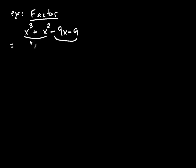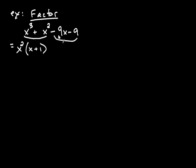What do the first two terms have in common? They've got an x squared. So I'm going to factor that out of both of them. x squared times x gives x cubed, and x squared times positive one gives x squared. For the next two terms, they clearly have a nine in common, but often when the first of the last two terms has a negative, we factor that out as well. So I'm going to factor out negative nine. Negative nine times x is negative nine x, and negative nine times positive one gives that negative nine.